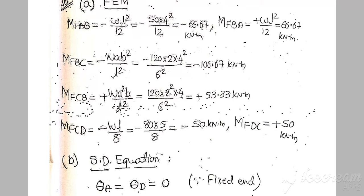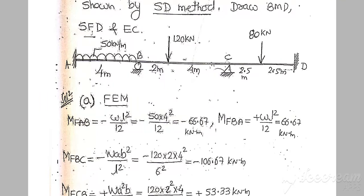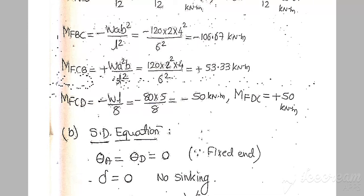Similarly, calculate fixed end moment CB using the fixed end moment formula and record the answer. Next, for fixed end moment CD, the point load is at the exact center, so the formula is minus W·L / 8. Substitute the values and calculate the answer.